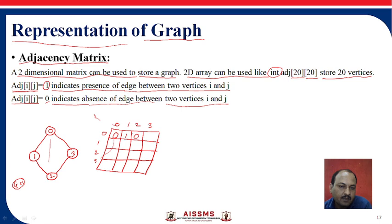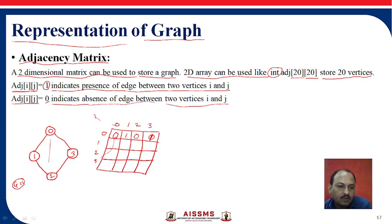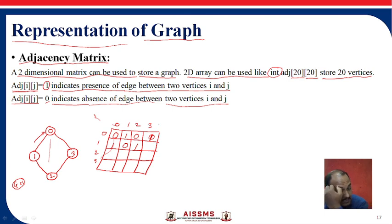Now, 0 to 3 — is there any connectivity? Yes, there is a direct connection, so it represents the edge between 0 and 3. Now moving to row 1: 1 to 0 — yes, direct connection; 1 to 1 — no self loop, so 0; 1 to 2 — yes, there is a connection; 1 to 3 — no connection, so 0.